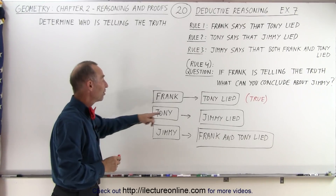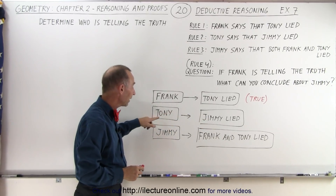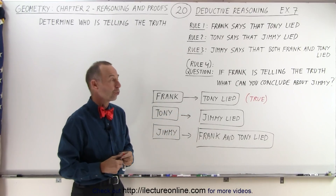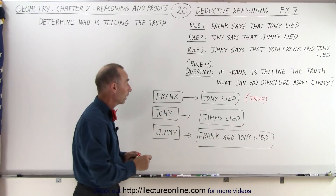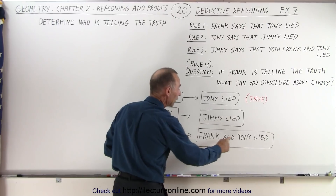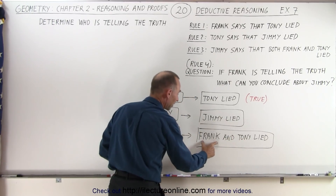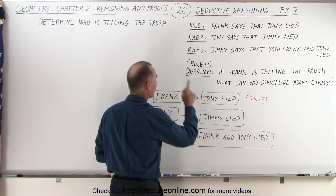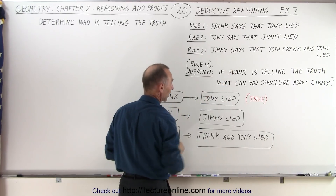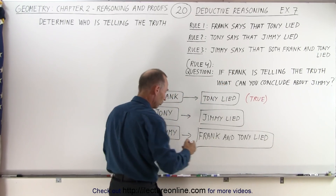Do we know if Jimmy lied? Well, we don't know directly, because Tony claims that Jimmy lied — but how do we know for sure? Jimmy claims that Frank and Tony lied. So if Jimmy claimed that Frank lied, but we know — because of rule number four — that Frank is telling the truth, that therefore this must be false.